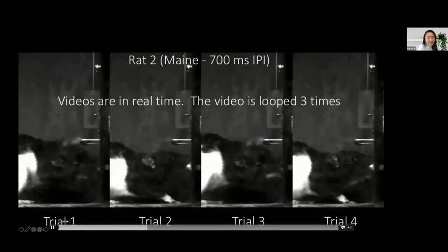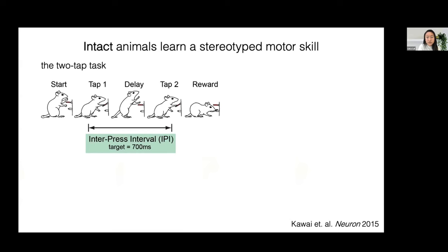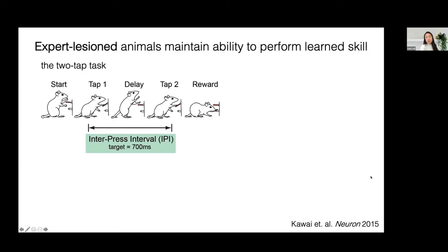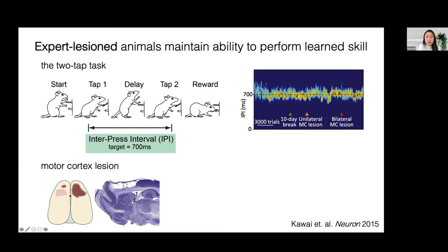Animals get really good at this task over the course of about a month. Here I've plotted the interpress interval over thousands of trials, where more red density means more taps. You can see how animals learn to elongate their interpress interval over time. We wanted to know if motor cortex was necessary for maintaining this motor skill once acquired. Risa, the first author, lesioned both the primary and secondary forelimb areas and asked whether the animal could maintain this IPI. As you can see, there's almost no forgetting of this learned skill, and notably these lesioned animals still exhibit the same stereotyped dance.